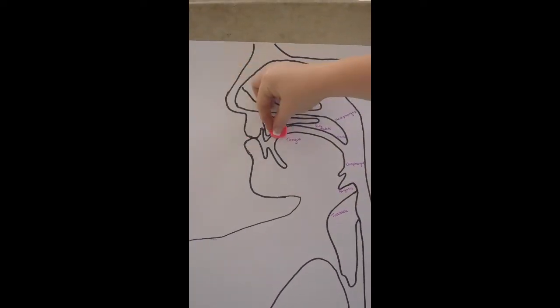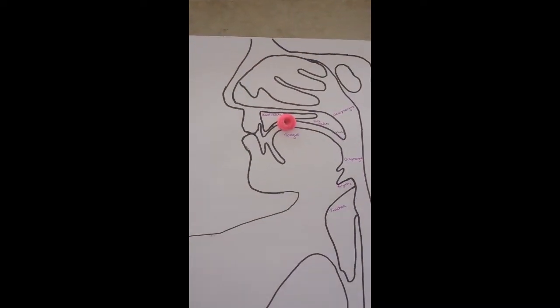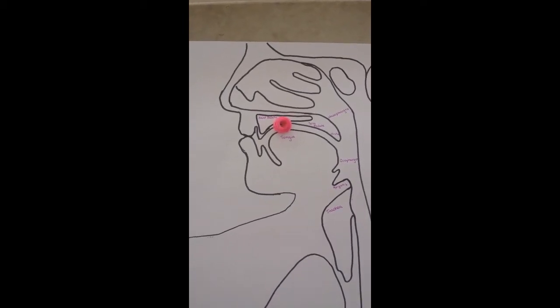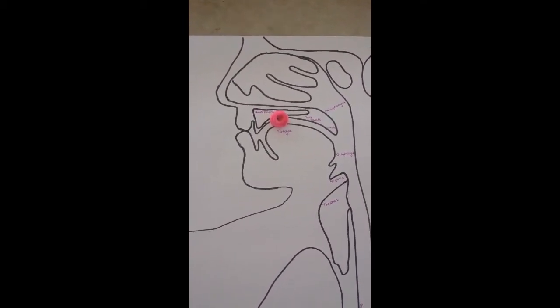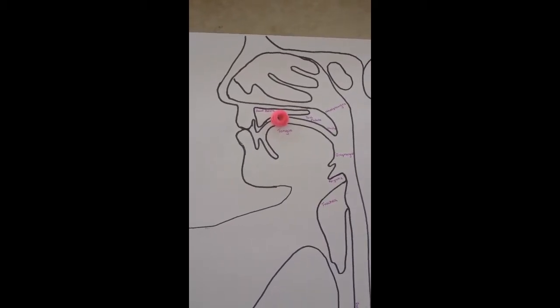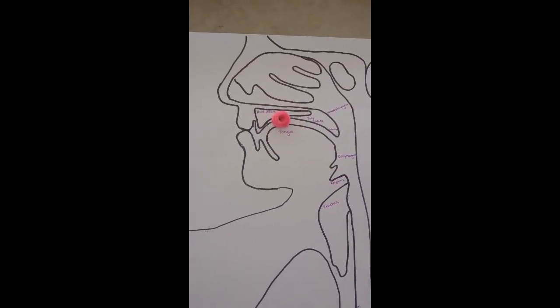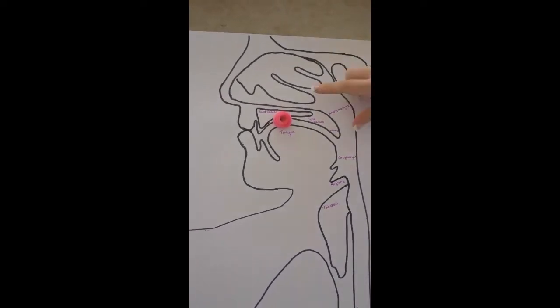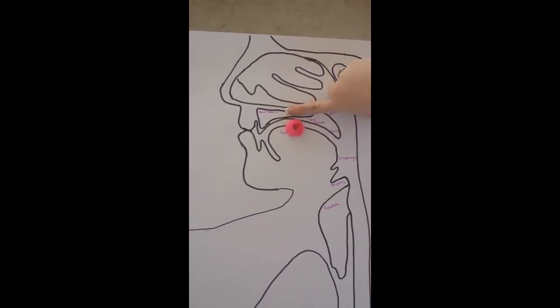Teeth break down the food into smaller pieces and mix it with saliva, creating the bolus. Chewing is controlled by the trigeminal nerve. The tongue then pushes the bolus of food against the hard palate in the mouth and back against the soft palate.